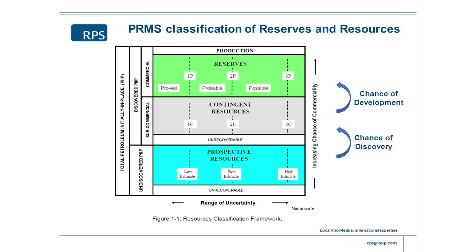For reserves, we always report what's called the 1P, 2P, and 3P reserves, which refer to confidence levels — the 90%, 50%, and 10% confidence. Beneath those, we have equivalent volumes called 1C, 2C, 3C — similar confidence levels but applied to discovered volumes that are not yet reserves. And beneath those, for prospective resources, we have low estimate, best estimate, and high estimate, again representing our P90, P50, and P10 confidence levels of the volumes.